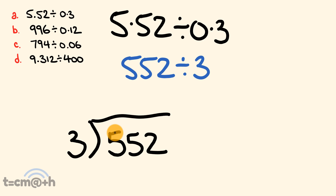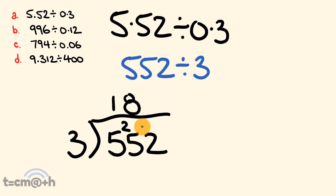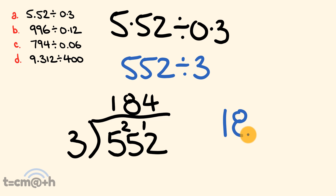So we have 5 divided by 3, which is equal to 1 with 2 left over. Moving along, how many times has 3 gone into 25? 3 goes into 25 eight times — 3 times 8 is 24 — so there is 1 left over. Finally, how many times does 3 go into 12? 3 goes into 12 four times. This gives us an answer of 184, but now we have to deal with the decimals.